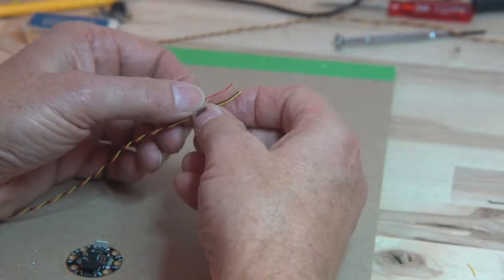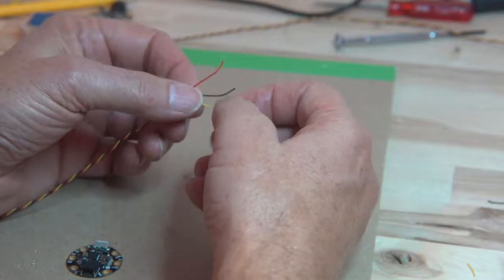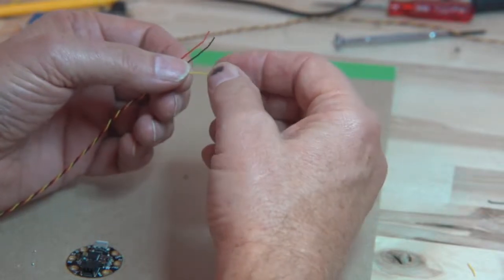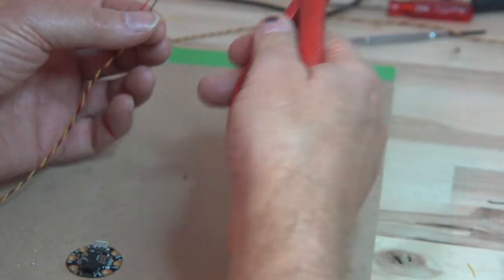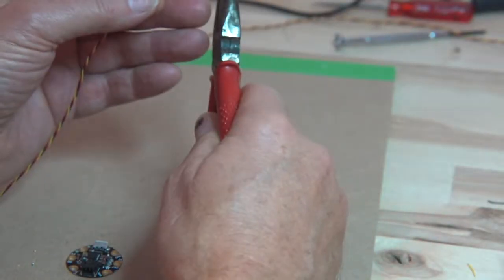Attaching the wires to the Gemma M0 is pretty simple compared to some of the other things we've done. So you take the cable that you made earlier, or perhaps one you bought, and if you need to strip the insulation off the outside, it's pretty simple.